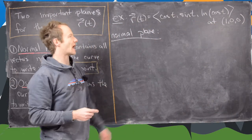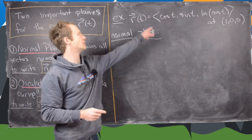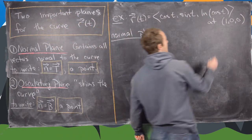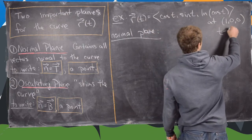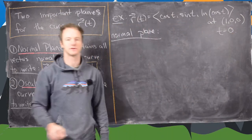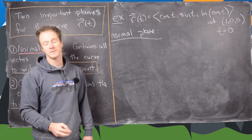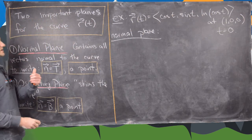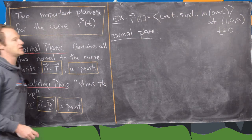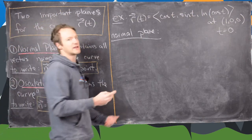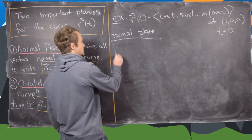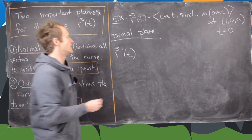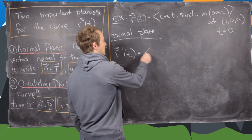Notice that if we're at the point (1, 0, 0), then we need to find the value of the parameter that puts us at that point. The value of the parameter that puts us at that point is t equals 0. Now, the normal plane's normal vector will be the unit tangent vector, or really just any tangent vector. We can find a tangent vector by taking the derivative of the function defining our curve.